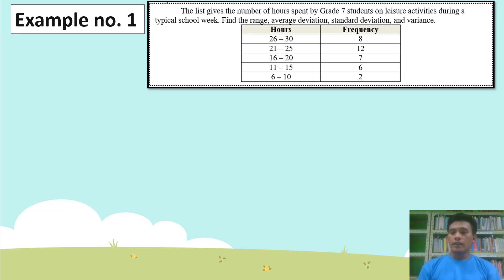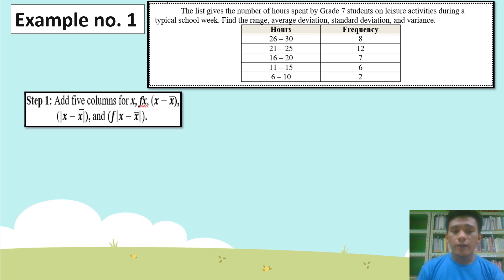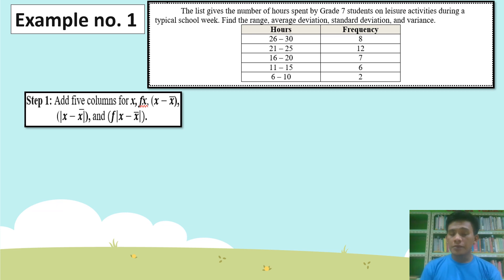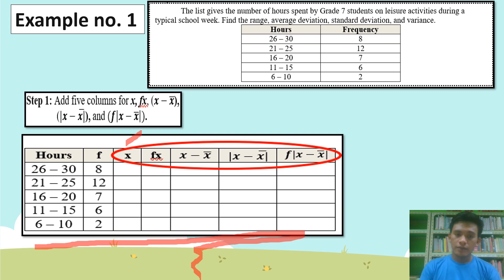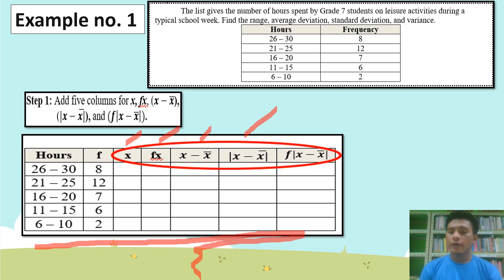So this will be our given data as you can see in the table. Step 1: Add 5 columns for X, FX, the quantity X minus the mean, the absolute value of X minus the mean, and frequency times the absolute value of X minus the mean. Please familiarize this table. First column for X, second column for FX, third column for X minus the mean, fourth column for the absolute value of X minus the mean, and the fifth column for frequency times the absolute value of X minus the mean.